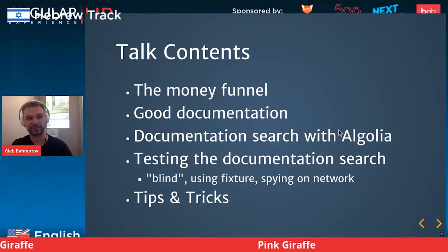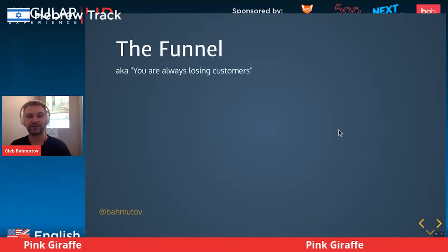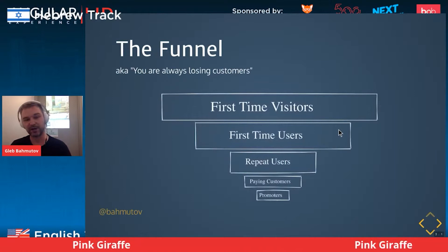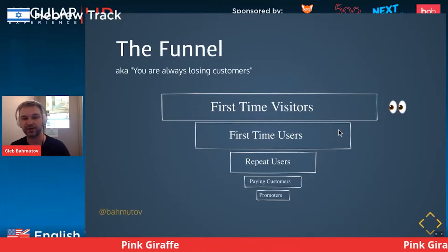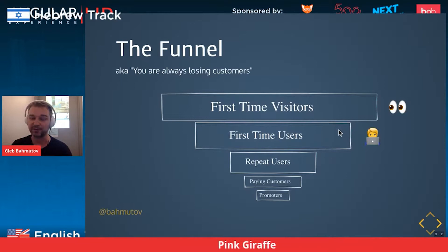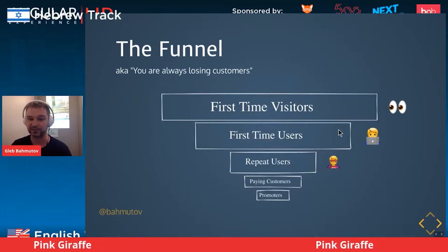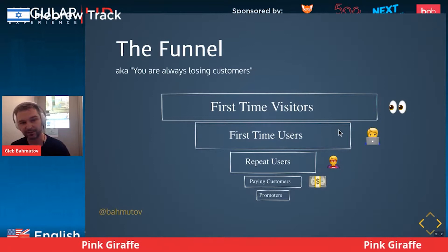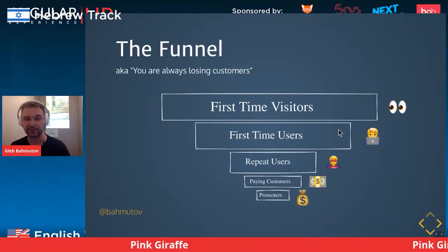Your business, no matter what you're selling online or as software, is losing customers. And usually it's described in terms of a funnel. At the top, you have first-time visitors — people who just found out about your company and went online to see what you're selling. Some of those first-time visitors will become first-time users, because some will try your tool. But only a subset will become repeat users, and even a smaller percentage will become paying customers. That's where you start making money.